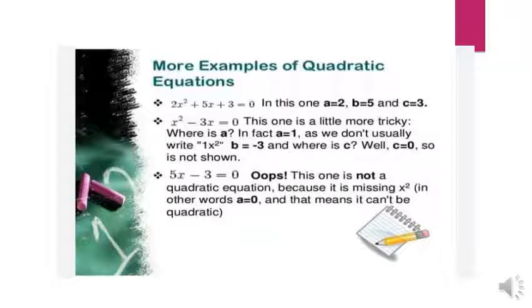Example 3: 5x - 3 = 0. This is not a quadratic equation because x² is missing. In other words, a = 0. The leading coefficient is 0, which means it can't be quadratic—it is a linear equation.